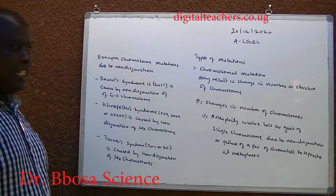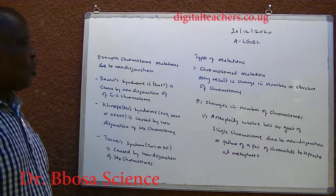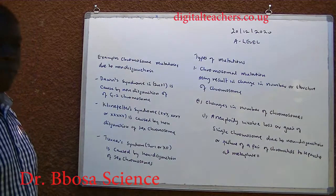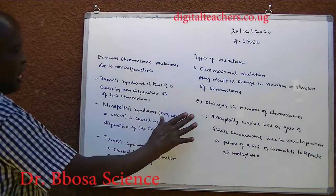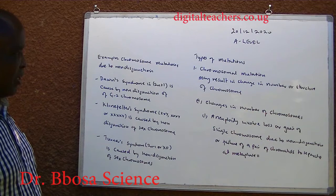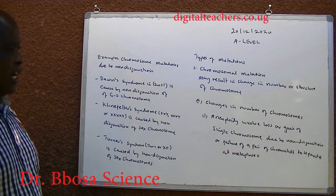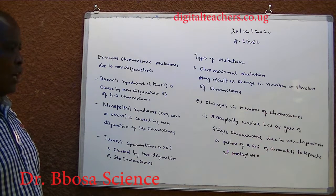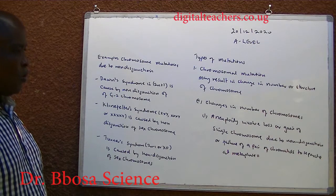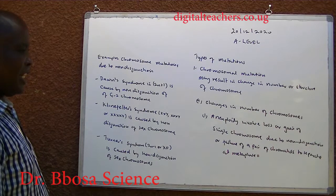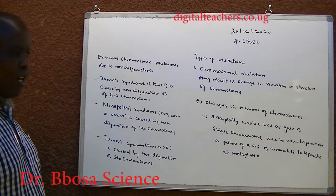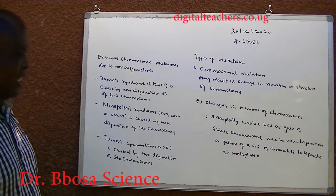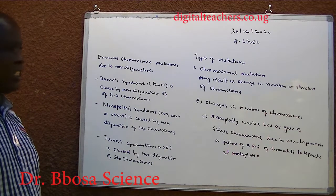Types of mutation: one, chromosome mutation — can result in change in the number and structure of chromosomes. A, changes in the number of chromosomes: aneuploid involves loss or gain of a single chromosome due to non-disjunction, or failure of a pair of chromatids to separate at metaphase 2.